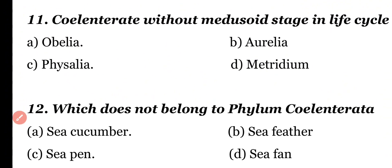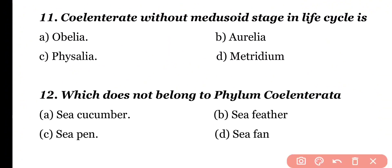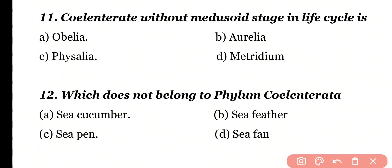Question number 11: A coelenterate without a medusoid stage in the life cycle is: Obelia, Aurelia, Physalia, or Metridium. Correct answer is option D. Metridium is a genus of coral and is a coelenterate which has only the polyp stage; the medusoid stage is absent in its life cycle.